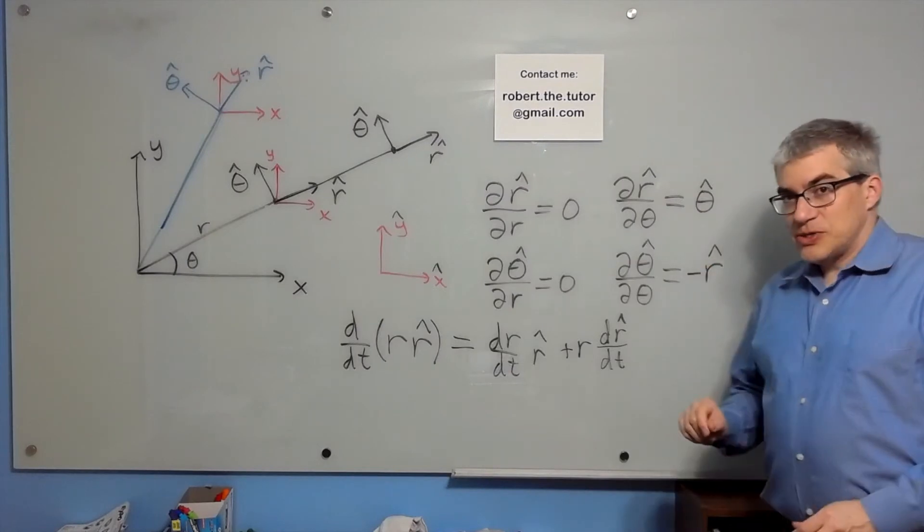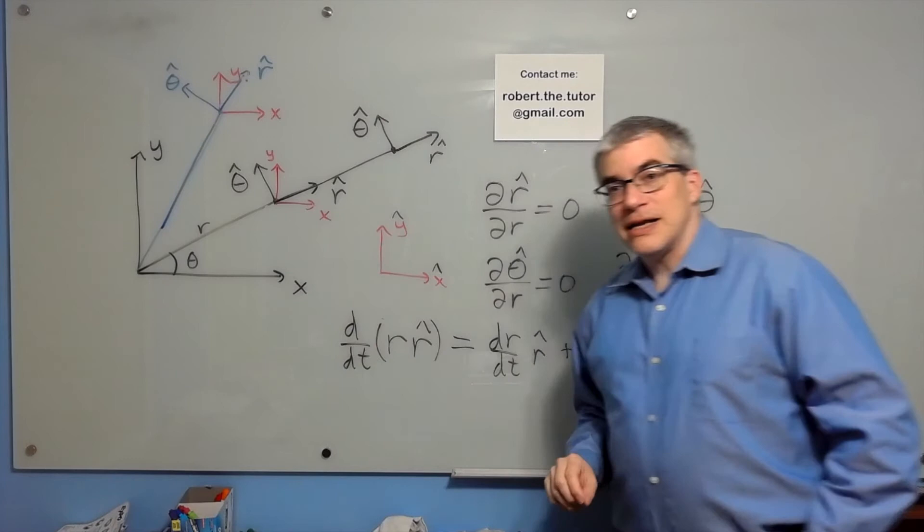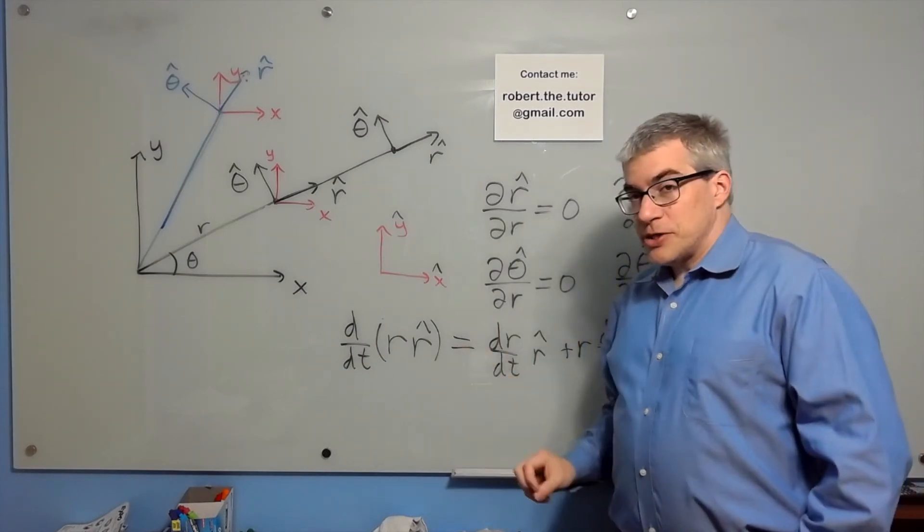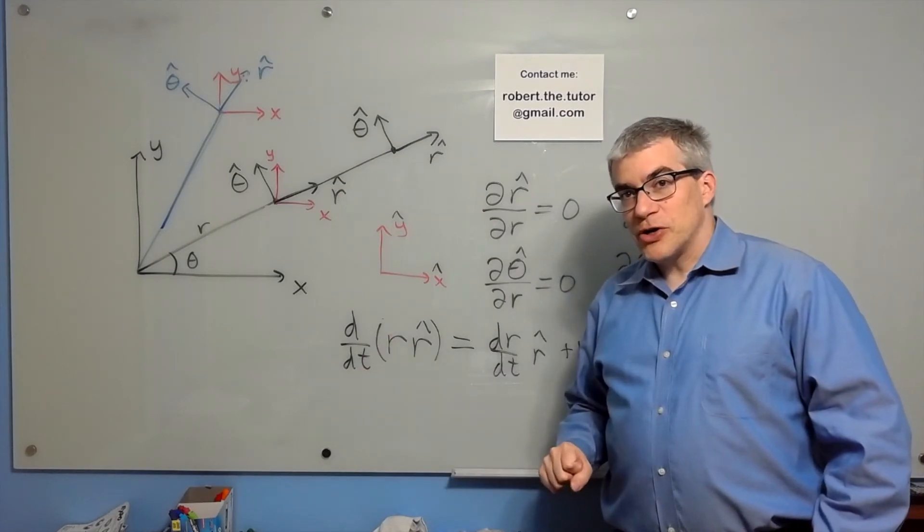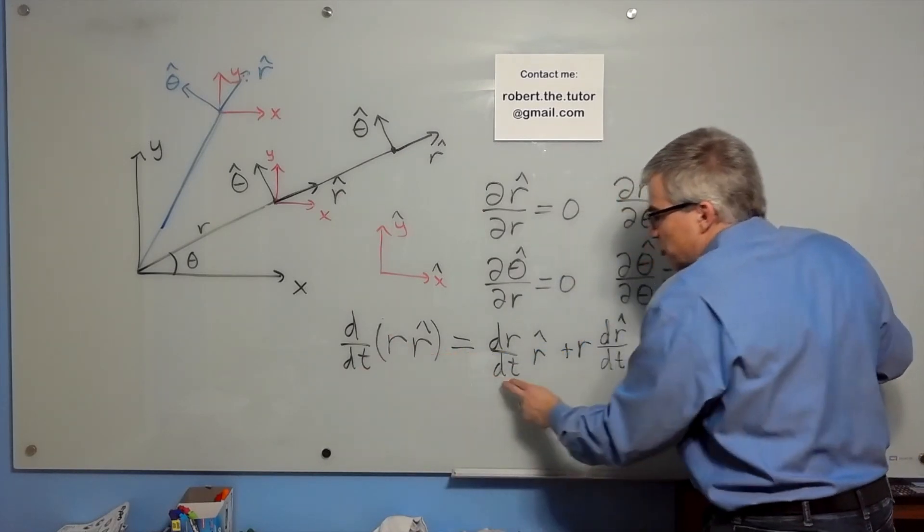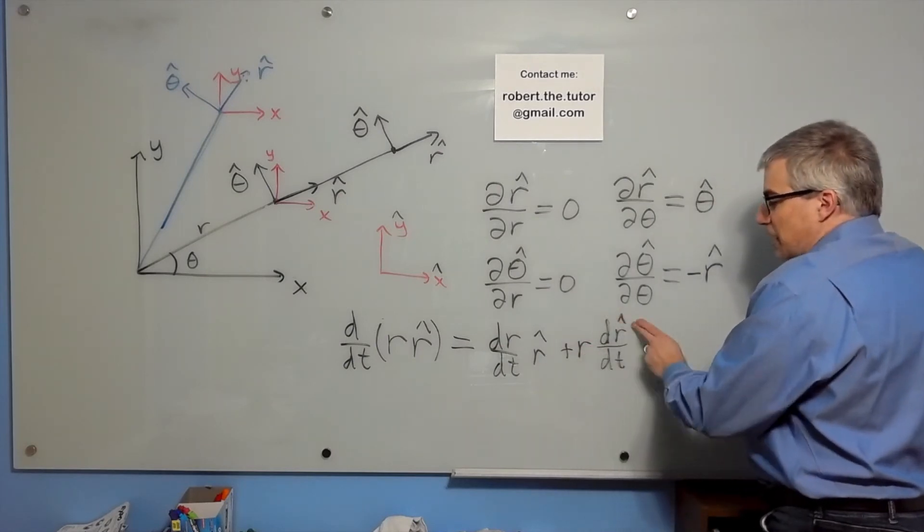And you need those, because if you're trying to take the derivative of, say, r-hat, that's actually a product rule. In Cartesian coordinates, it wouldn't be. You'd just pull out the x-hat and just go ahead and find the derivative of r, and you'd be done.